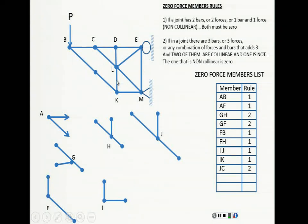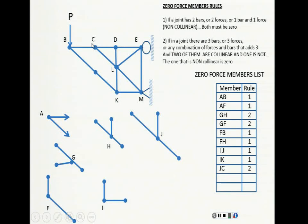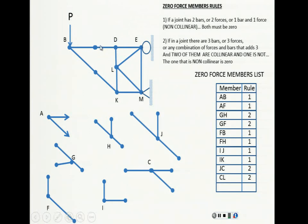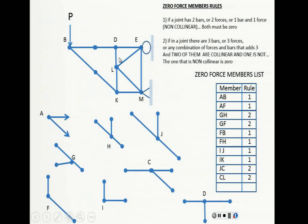Now you can either come here or here. You have three bars, two of them collinear, one is not. The one that is not, which is CL, is zero — rule number two. Erase it. And now look at this joint: three bars, two of them collinear, one is not. So DL must be zero, rule number two.